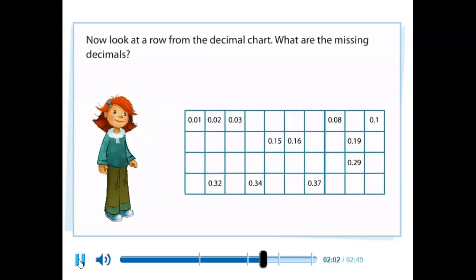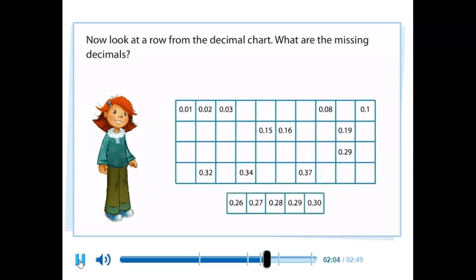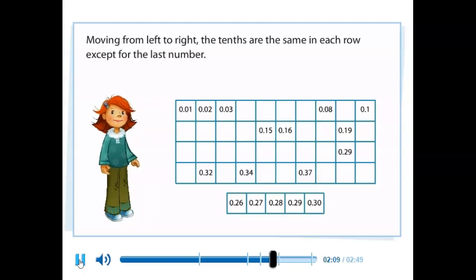Now look at a row from the decimal chart. What are the missing decimals? Moving from left to right, the tenths are the same in each row except for the last number.